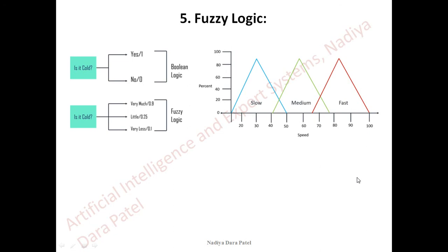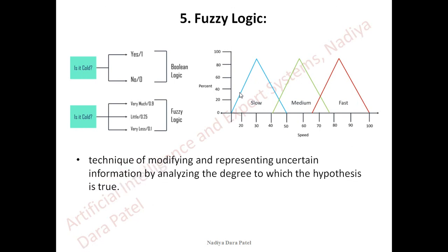Fuzzy logic is another branch studied in mathematics or electronics. Fuzzy logic helps in creating truth tables where answers are in the form of yes or no — that is, one or zero. On the basis of answers gained using the fuzzy truth table, a graph is constructed and finally we get a pattern or something worth concluding. This is also a part of AI.